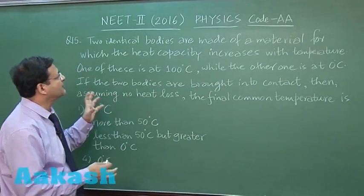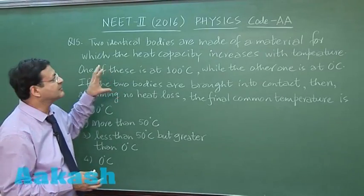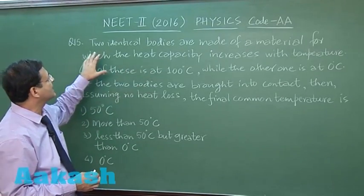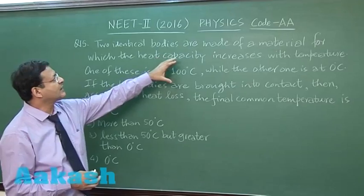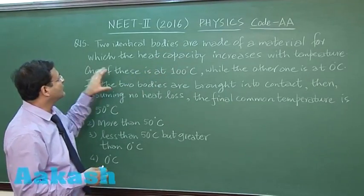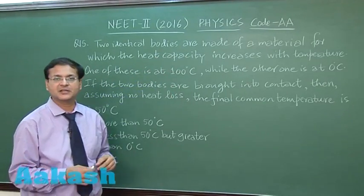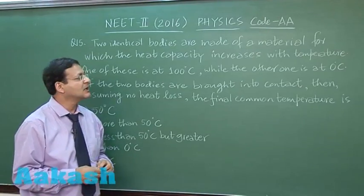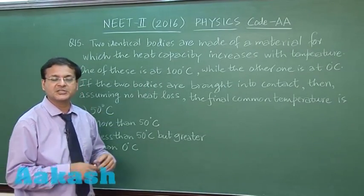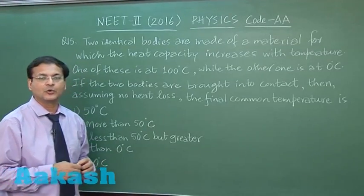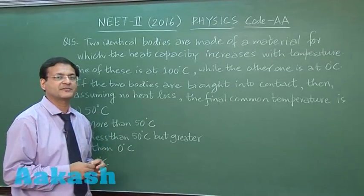Now this question which is based on calorimetry, question 15, says that you have two identical bodies made of a material for which the heat capacity increases with temperature. This is a peculiar thing which has been given to you. As the body is at larger temperature, its heat capacity will be more. Heat capacity is what? Mass into specific heat.